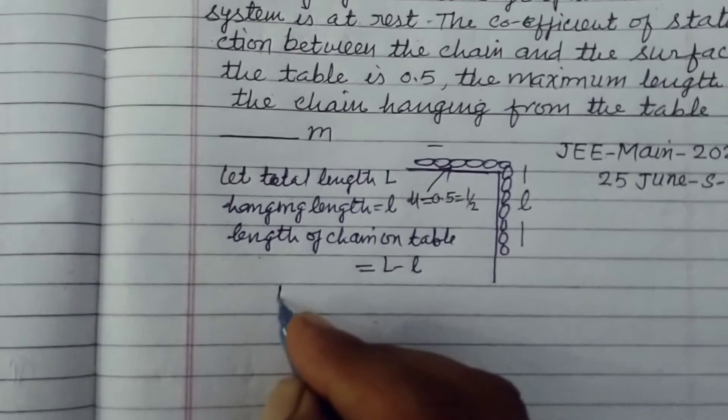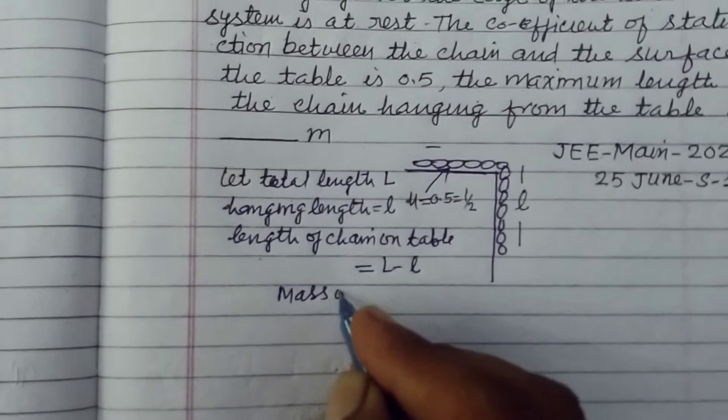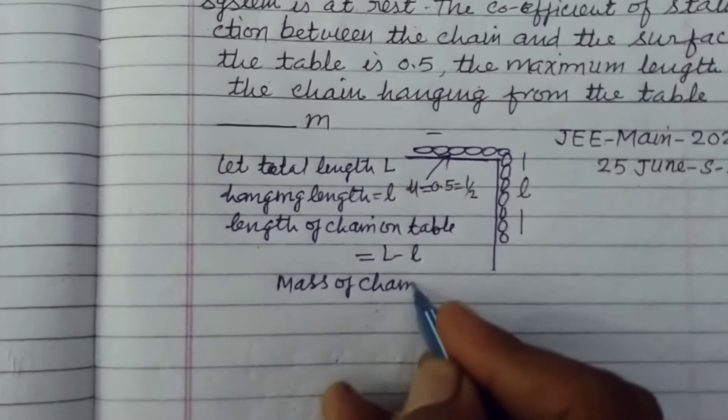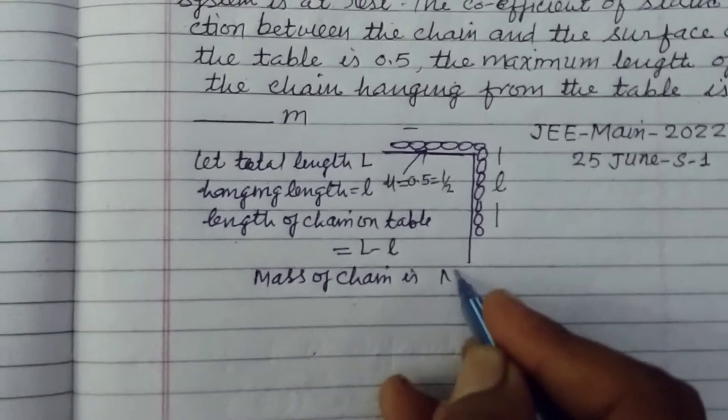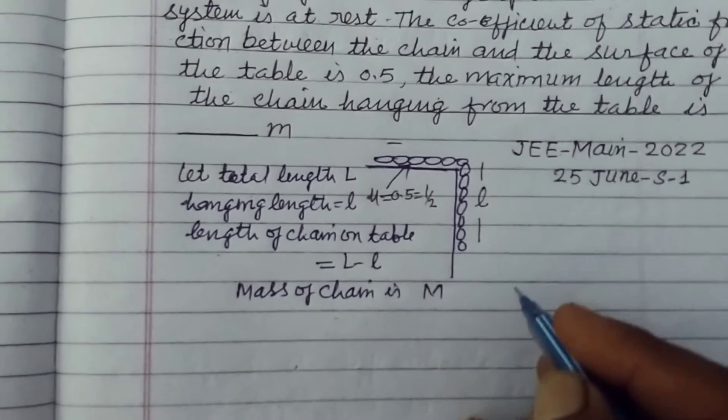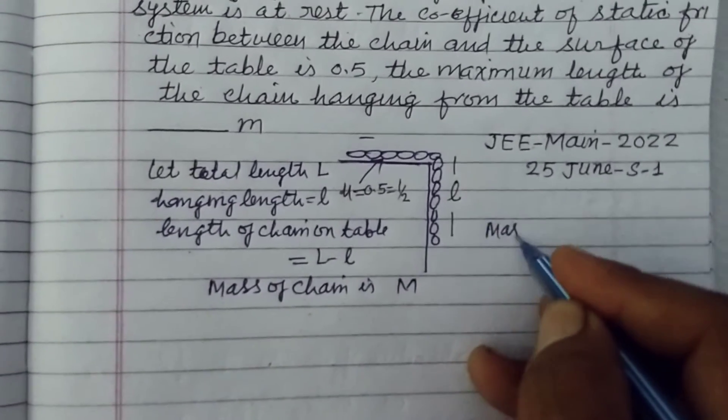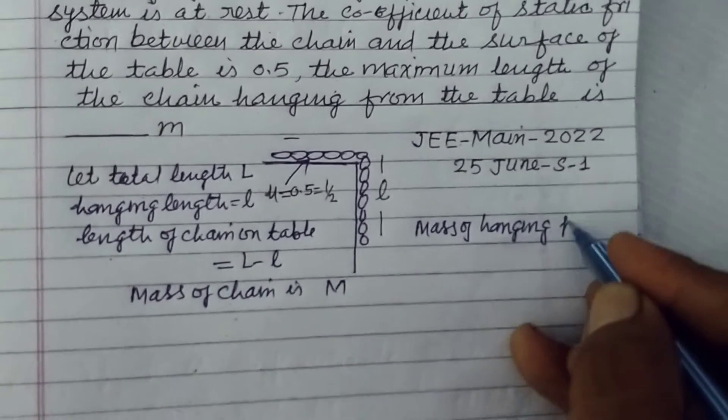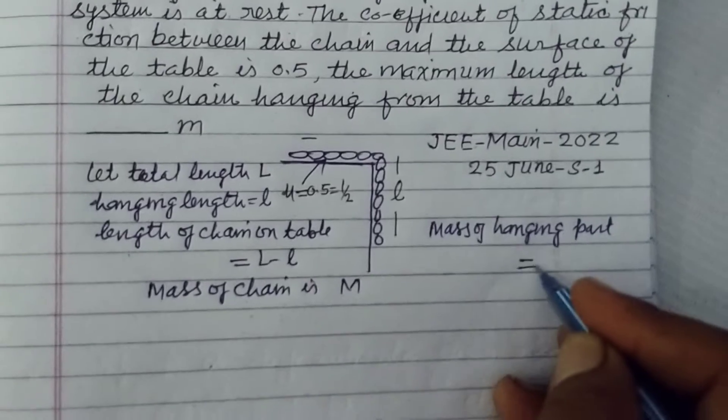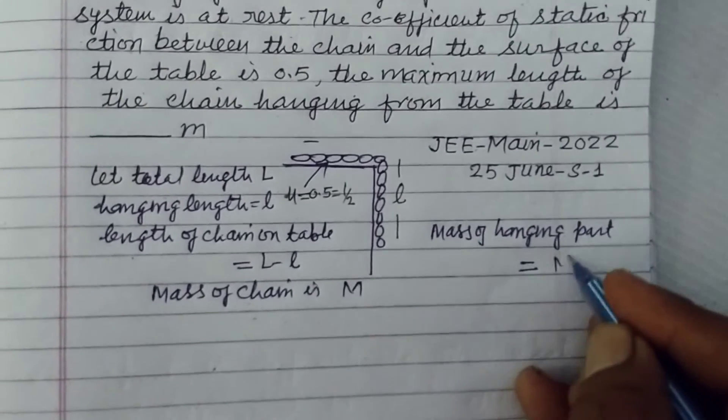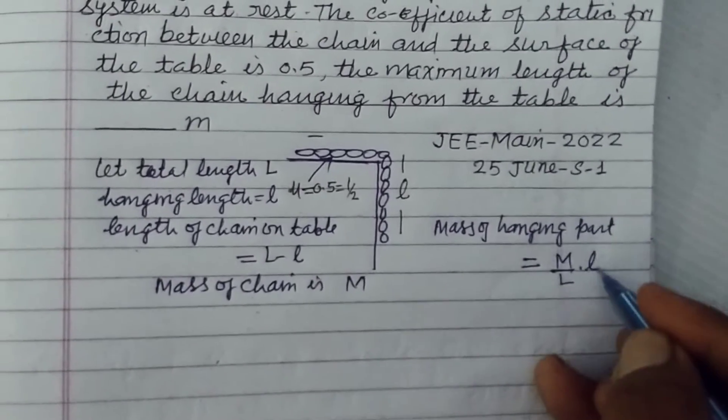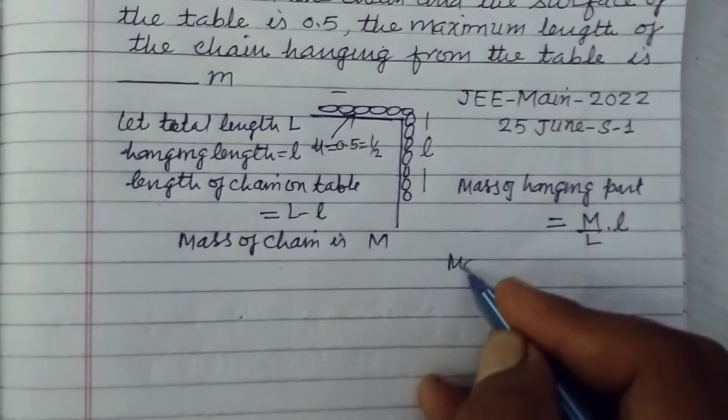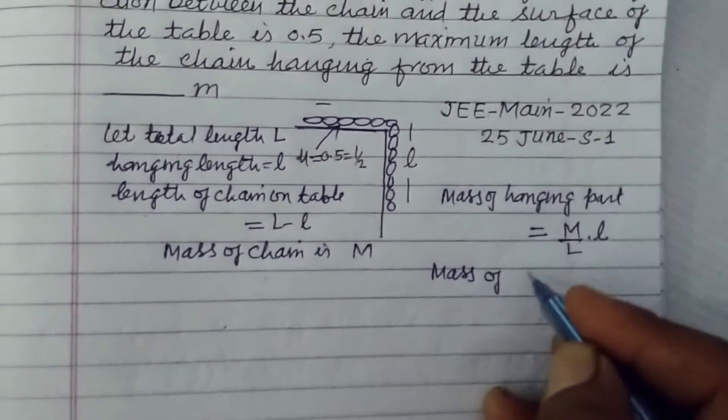If mass of chain is M, then mass of this part, therefore mass of hanging part is equal to M over L into l. Mass of part on length on table.